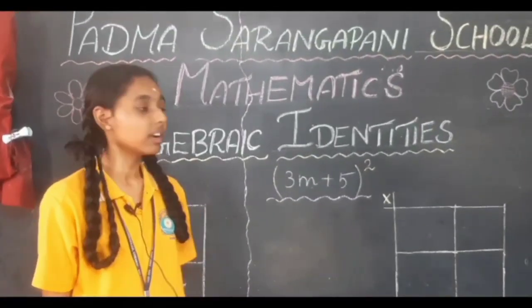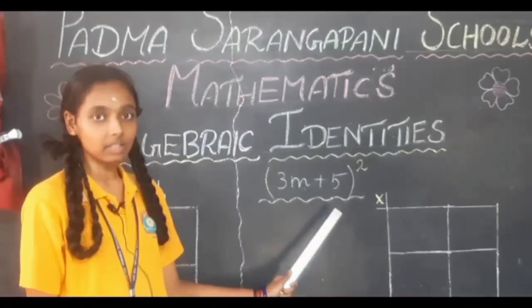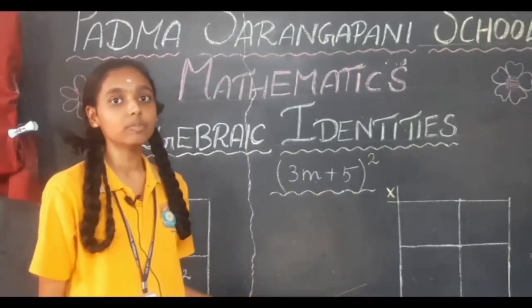Can anyone try for 3M plus 5 the whole square? Here A is 3M and B is 5. Substitute the value and find the answer.